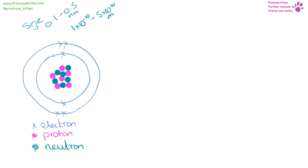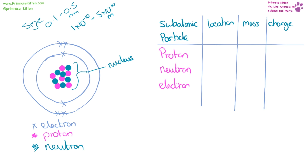Inside our atom, we have protons and neutrons, and in the shells on the outside we have electrons. The bit in the middle is called the nucleus. Protons and neutrons are located in the nucleus, whereas electrons are in the outer shells.